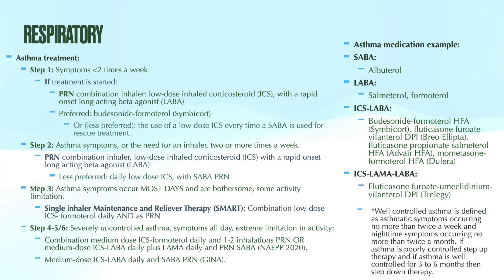Step two has a couple of treatment options. The two main recommendations are that same combination PRN inhaler — formoterol with a low-dose inhaled corticosteroid — or a daily low dose of inhaled corticosteroid with a PRN SABA. The preferred option is the PRN combination inhaler, but you could also do a daily inhaled corticosteroid if they're already using a SABA PRN.